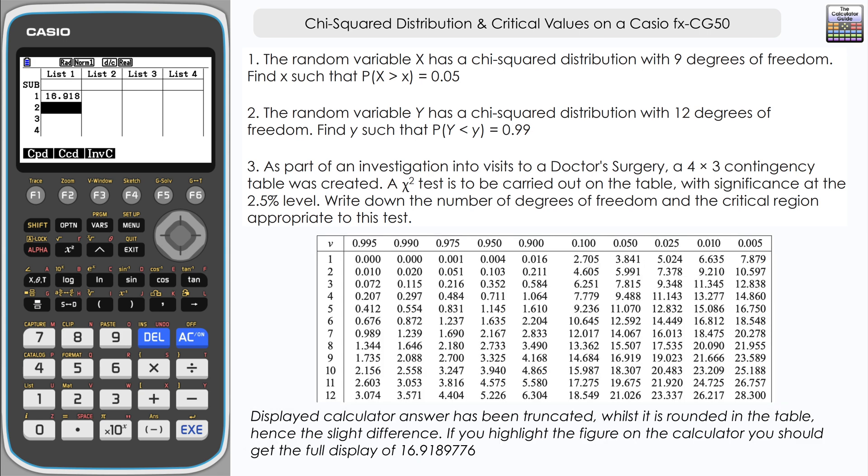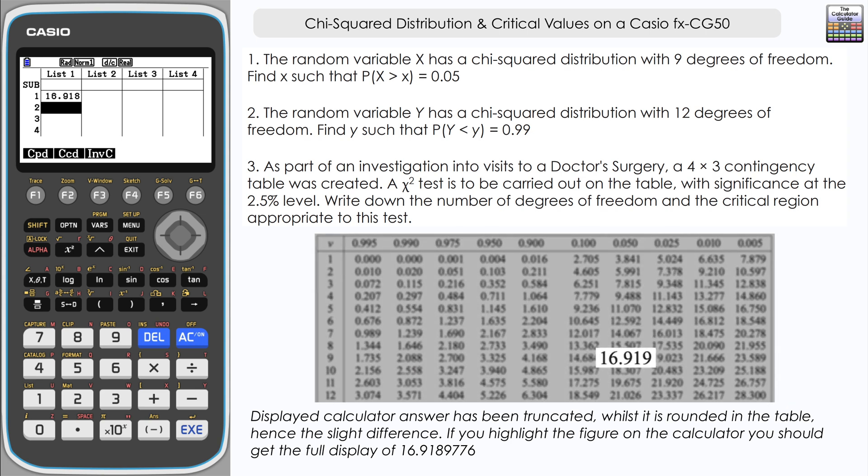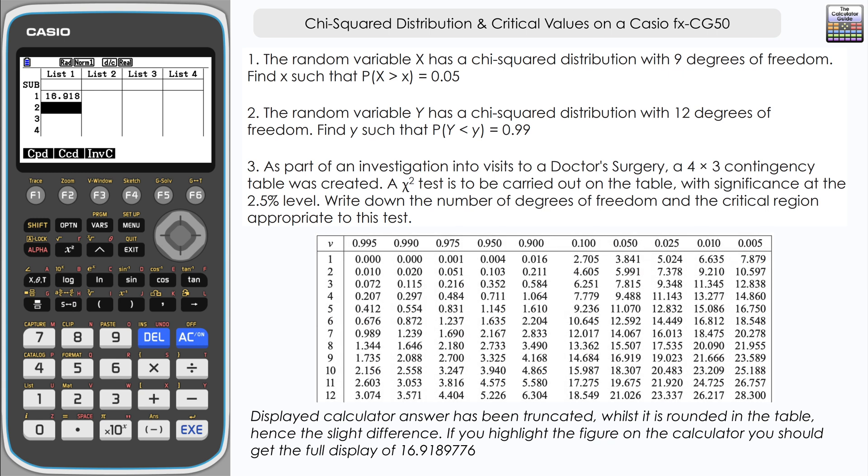And if we just take a look at the distribution tables just to verify that, you can see that we get the same value here where we cross reference 0.05 and 9 degrees of freedom. So it's the same value from the table.